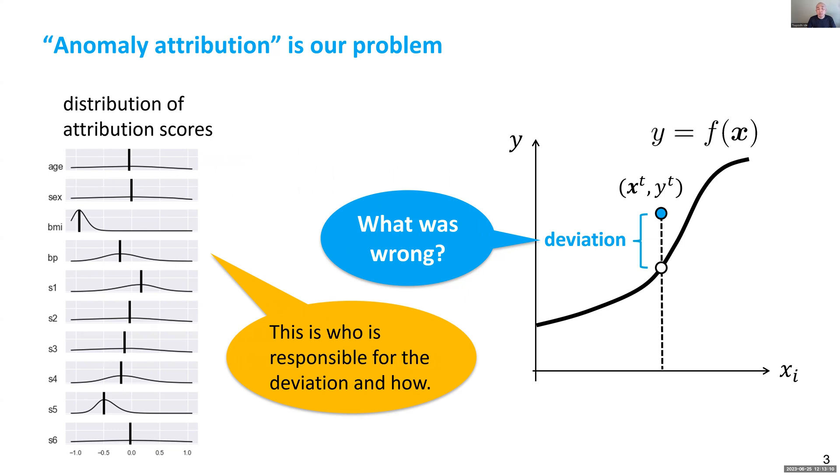So here, one of the key points is that we are getting the distribution of anomaly score, attribution score, not just the attribution score itself.